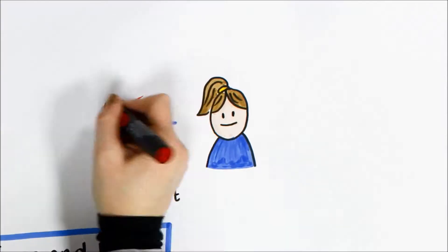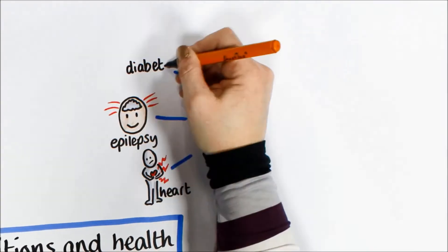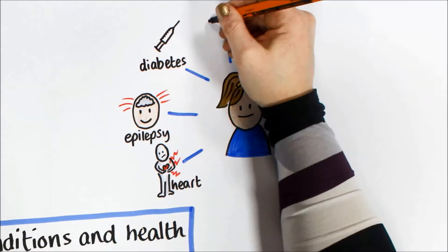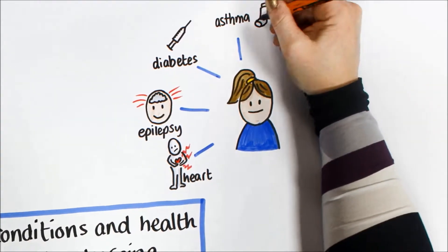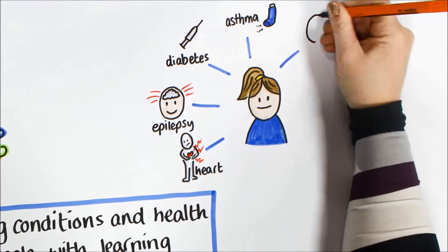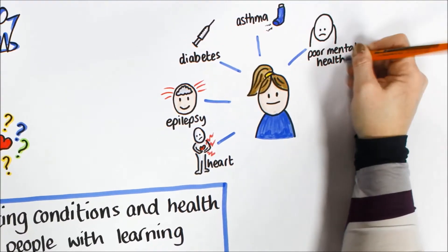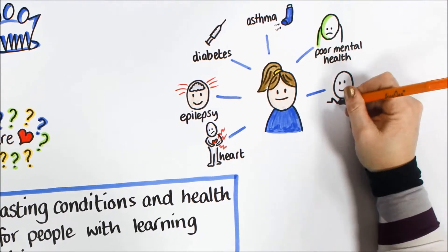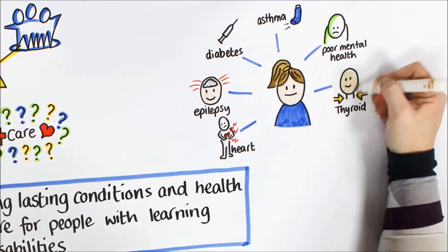Also more people with learning disabilities had problems with their thyroid, which is a part of the body that helps to manage the body's energy levels. If the thyroid isn't working properly it can make us feel very tired and weak and can also cause us to put on weight or lose weight.